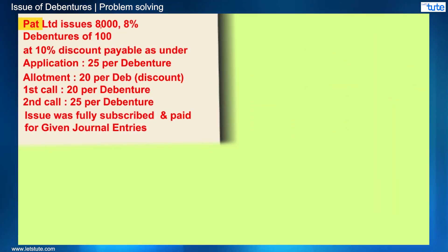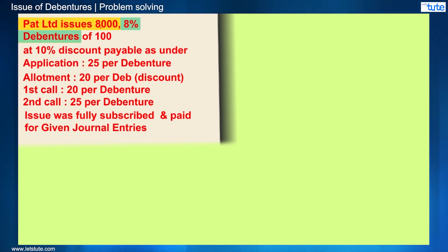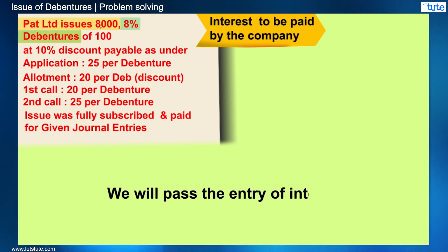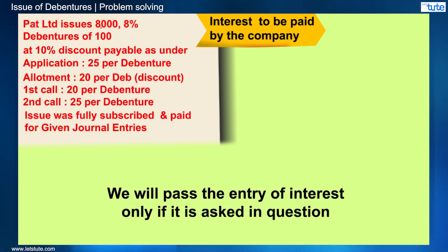So first, the company issues 8,000 8% debentures. Here, 8% is the name of the debenture and also the interest that has to be paid by the company. We will pass the entry for interest only if our question says so.